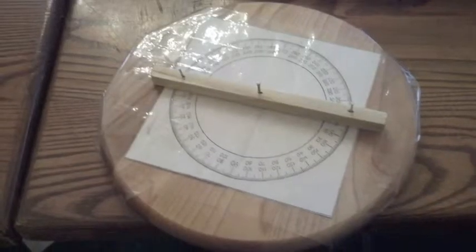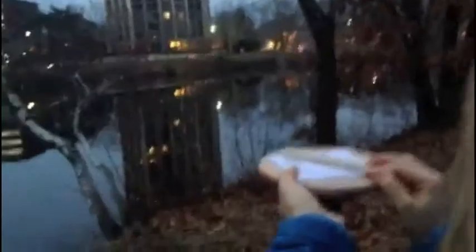The allidade is a primitive instrument used to measure angles between sighted objects. It consists of a flat plane surface and a bar that rotates around a pivot point in the center of the base.